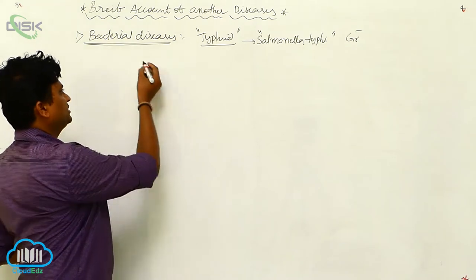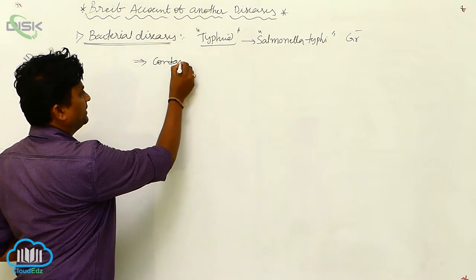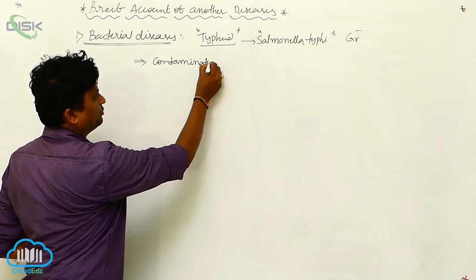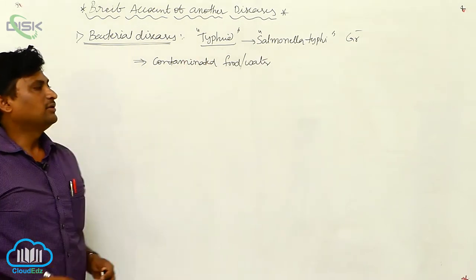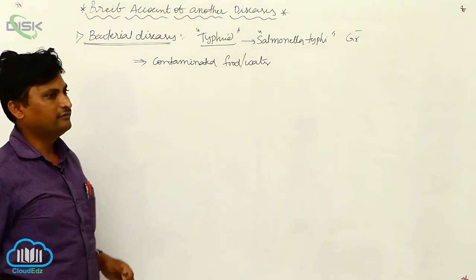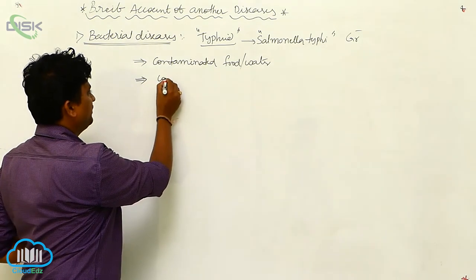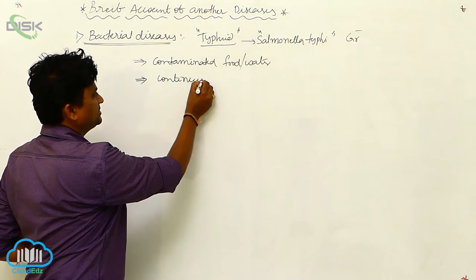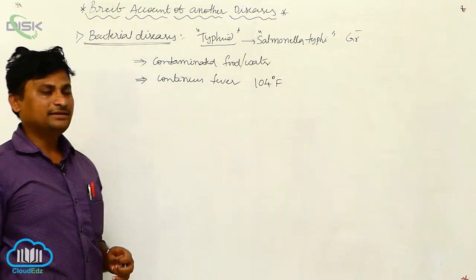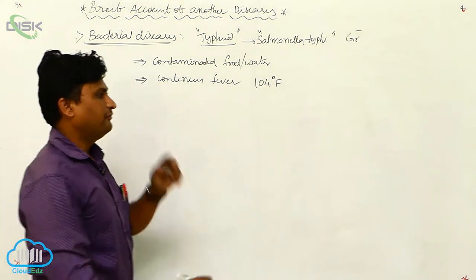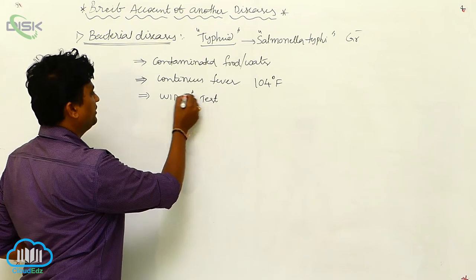Typhoid fever is spread by contaminated food and water. Salmonella typhi reaches a healthy individual through contaminated food and water. To identify typhoid fever, the patient presents with continuous fever reaching up to 104 degrees Fahrenheit. It is identified through a laboratory Widal test.